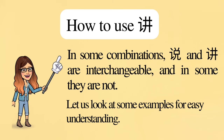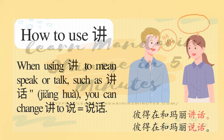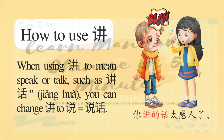Let us look at some examples. When using 讲 to mean 'speak' or 'talk,' such as 讲话, you can change 讲 to 说, giving 说话. For example, 'Peter is talking to Mary' — you can switch 讲话 to 说话. You can also switch 讲 to 说 in: 你说的话，太感人了.